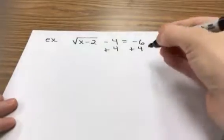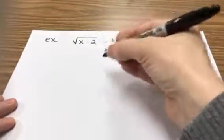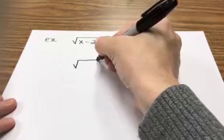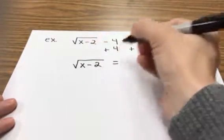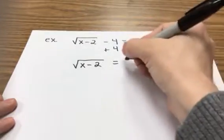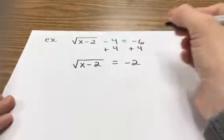So now that I've added 4, what happens on this side? The square root stays the way it is and the negative 4 disappears to the right side. Negative 6 plus 4, negative 2. Good.